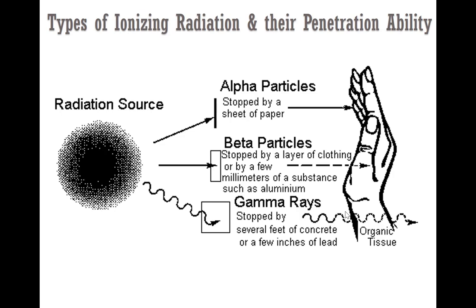This chart shows the types of ionizing radiation and their penetration ability. Alpha, as we saw earlier, is a particle that is pretty big and heavy. As a result, it slows down pretty fast and, because of its size, is unable to penetrate through a sheet of paper — it can be stopped very easily, and even the skin of a person can stop an alpha particle. Beta particle, on the other hand, can be stopped by a layer of clothing or by a few millimeters of a substance such as aluminum.